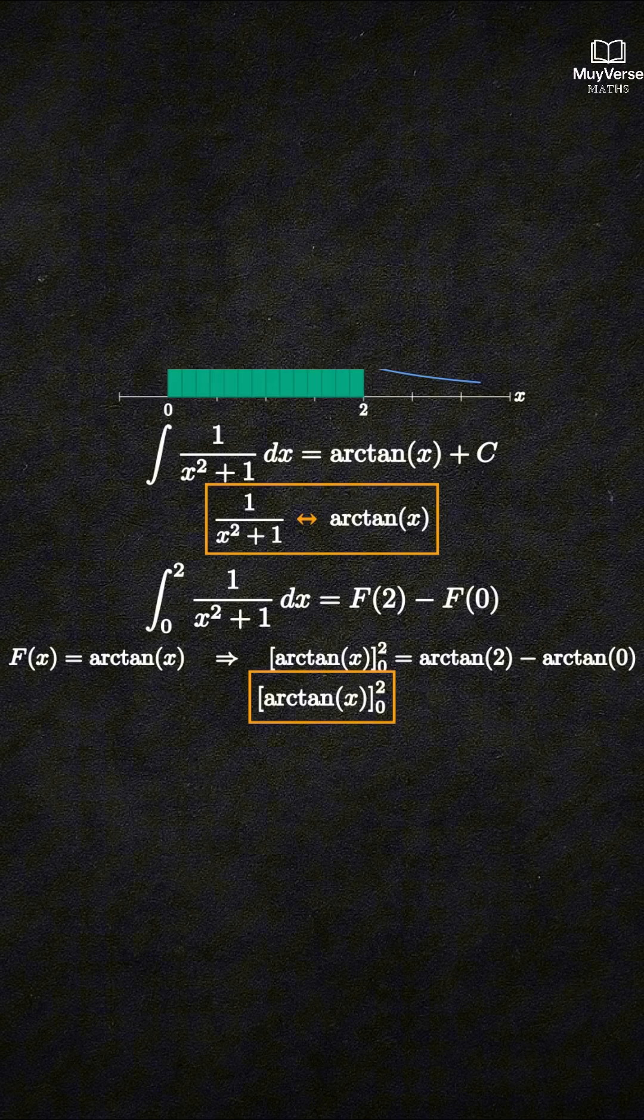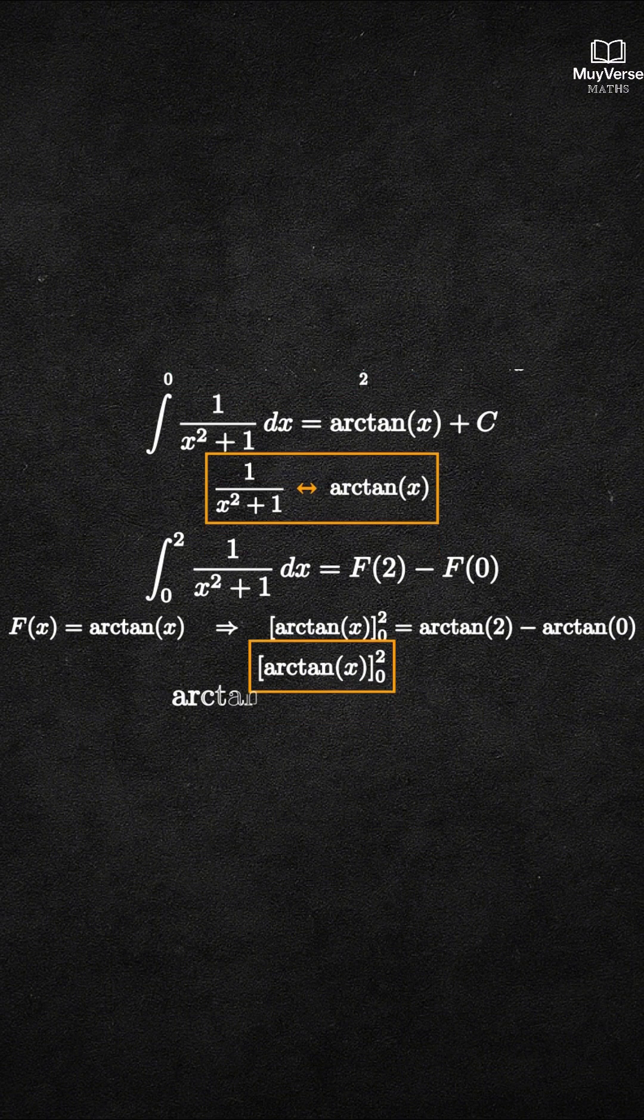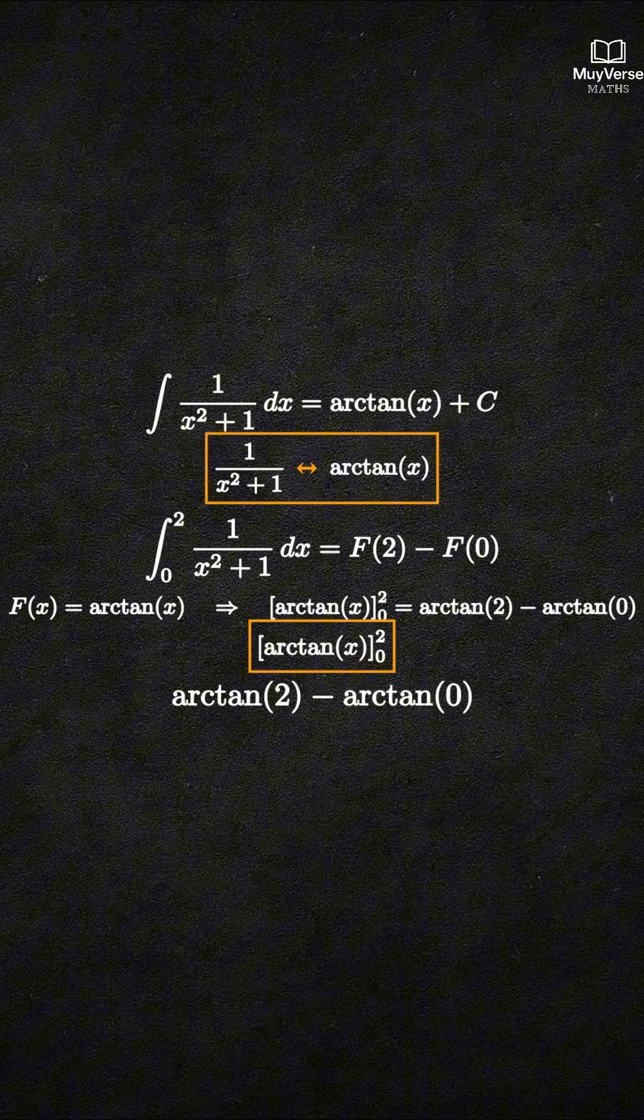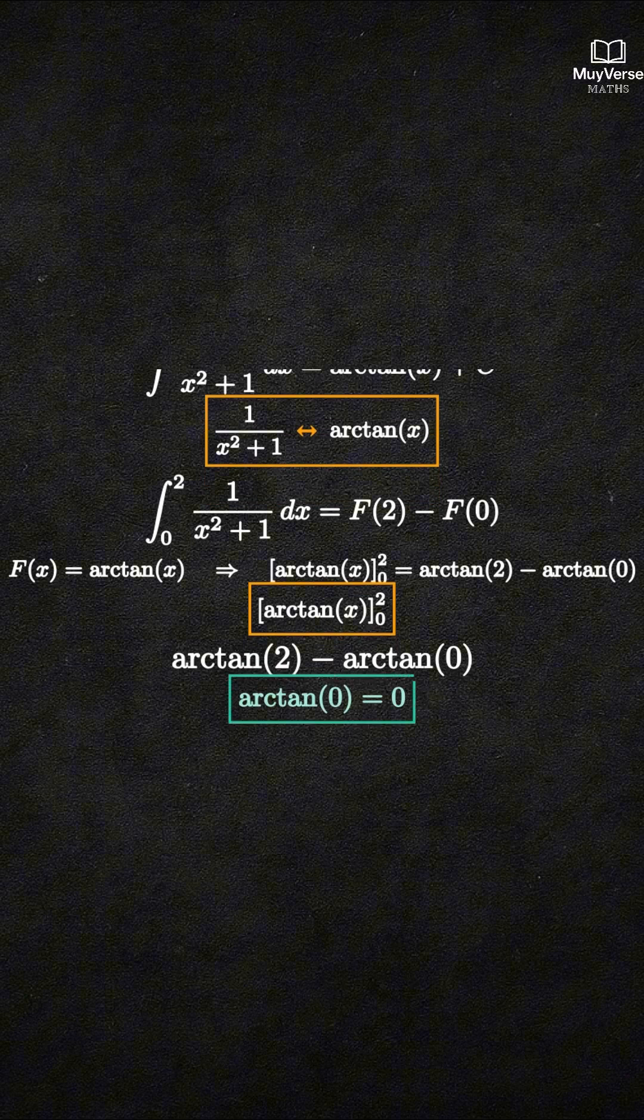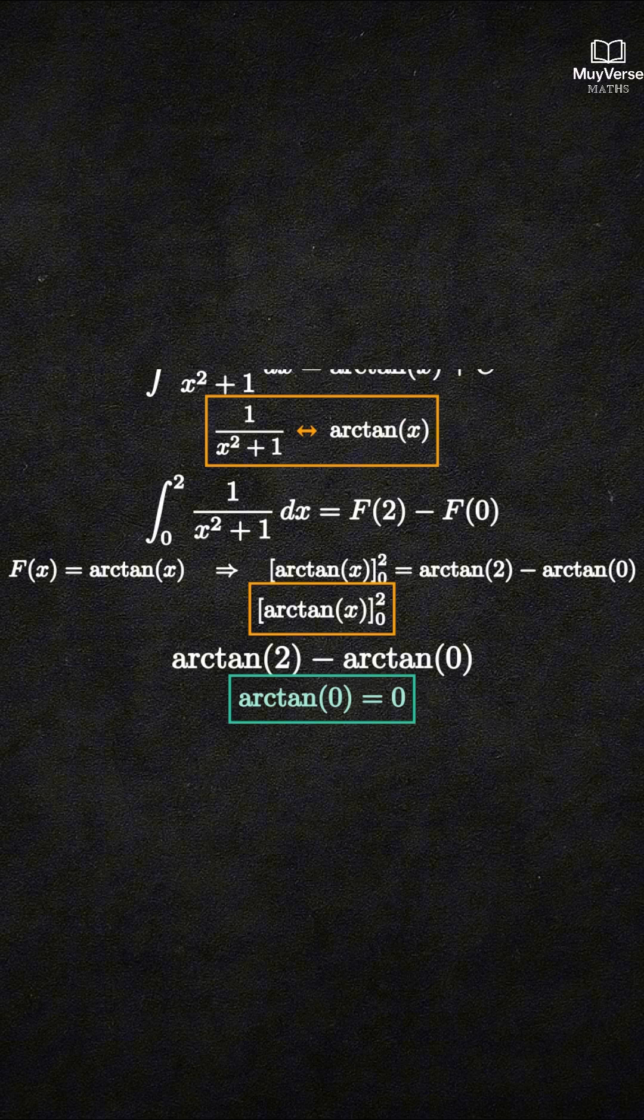Step 3. Substitute the limits. We write arctangent of 2 minus arctangent of 0. Since tangent of 0 equals 0, arctangent of 0 equals 0. So our value is arctangent of 2 minus 0.